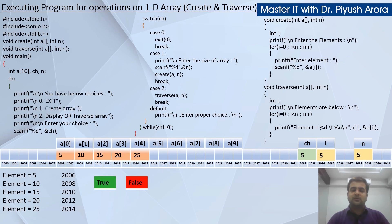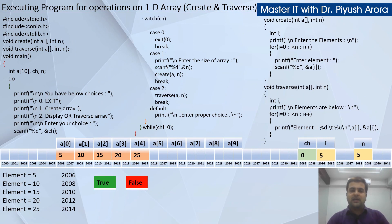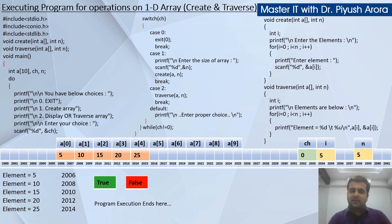All do-while statements execute again; scanf reads the user's new choice. Suppose the user now enters 0, because create is done and traverse is done. Switch(0) — case 0 matches, the program exits. The break statement means the statements below will not execute. The program terminates and program execution is complete. This is how we create and traverse the array. Please watch this video once again. Thanks for watching — please like and subscribe.